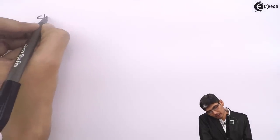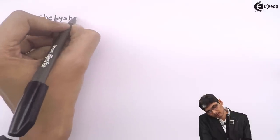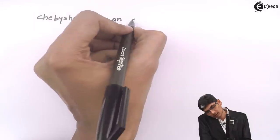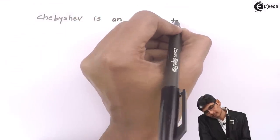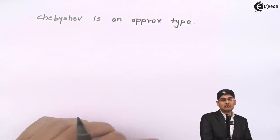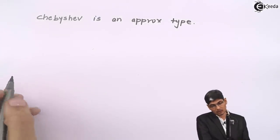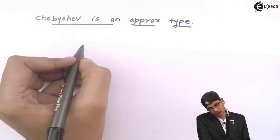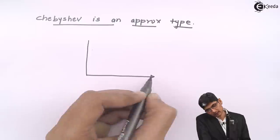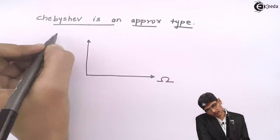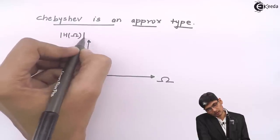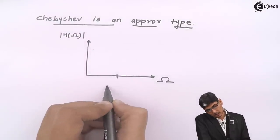Today we are going to study the design equations of a Chebyshev filter. Let us first understand what a Chebyshev filter is. Chebyshev is an approximation type which we use in designing a filter. In a Chebyshev type filter, if we plot the characteristics of frequency versus transfer function,